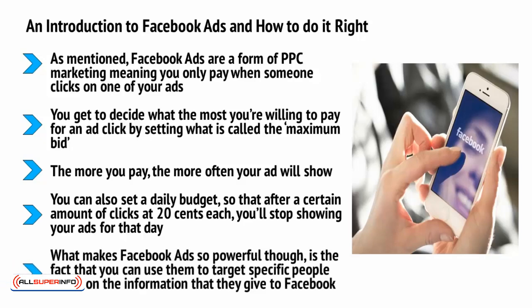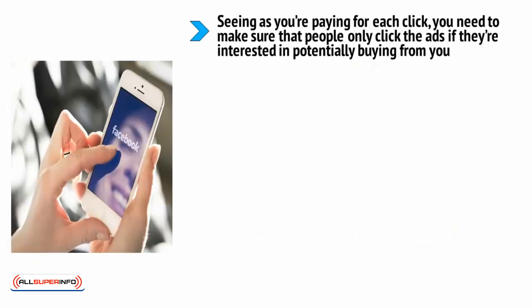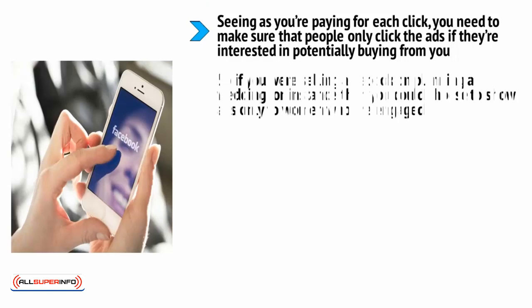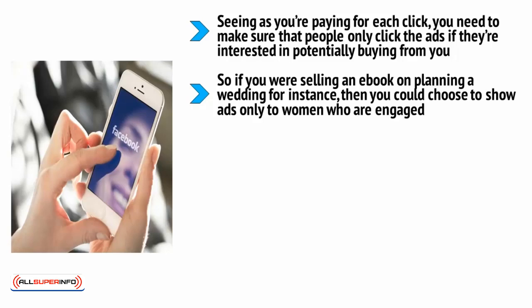What makes Facebook Ads so powerful is the fact that you can use them to target specific people based on the information they give to Facebook: their age, their sex, their location, as well as their interests, their relationship status, and even their income. Seeing as you're paying for each click, you need to make sure that people only click the ads if they're interested in potentially buying from you. So if you were selling an e-book on planning a wedding, for instance, you could choose to show ads only to women who were engaged, making it much more likely they'll be interested.